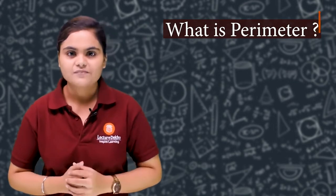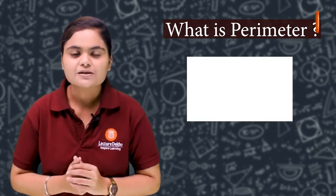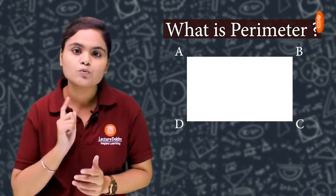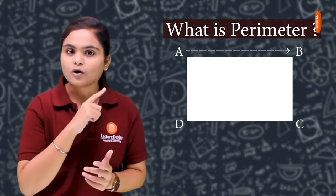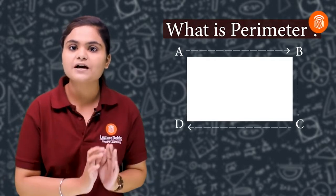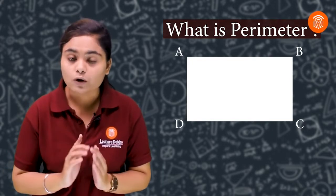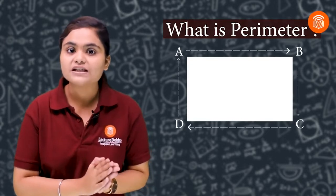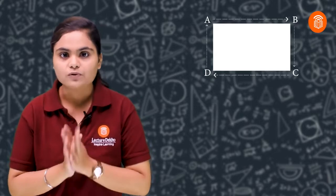First, let's discuss what is Perimeter. Suppose students, a ground is in a rectangle shape — suppose ABCD. Suppose I have to put a whole round of this ground. Students, I started from A, and when I put a whole round of the ground, I went back to point A. I covered the whole boundary distance. This is called the perimeter of the ground — that is, the length of the boundary of the ground.